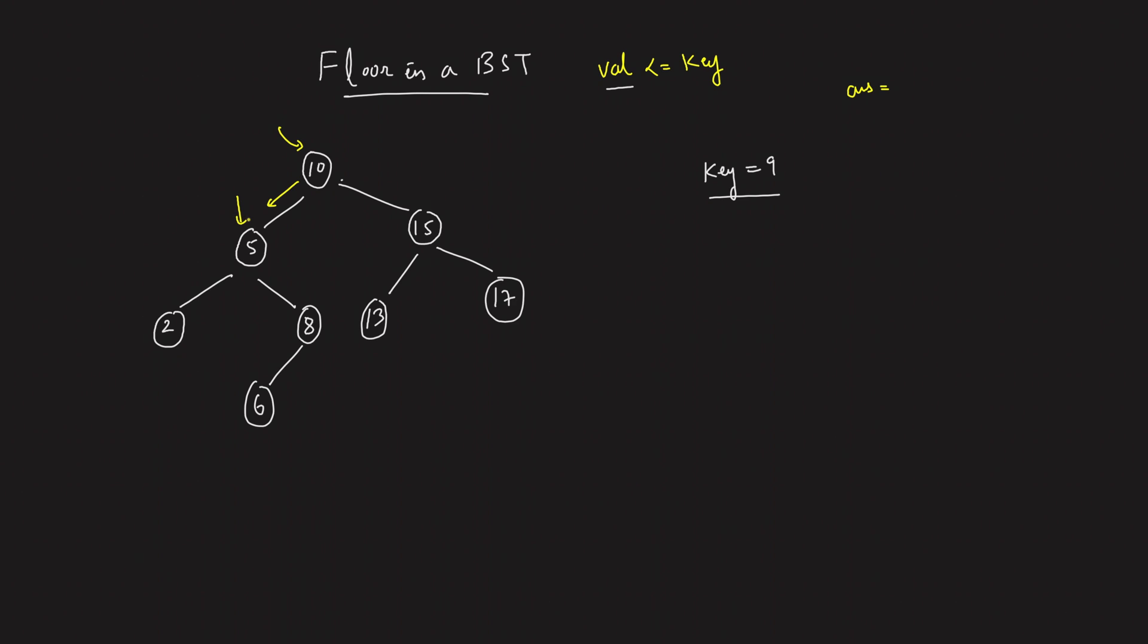Over here, you have 5. So you got someone who's lesser than 9. So 5 is as of now your answer. Now what do you want? You want this value to be as large as possible. So if you want to make this large, will you move left or will you move right? It's an obvious answer. You will definitely move right. Why? Because if you move right, this answer 5 will increase.